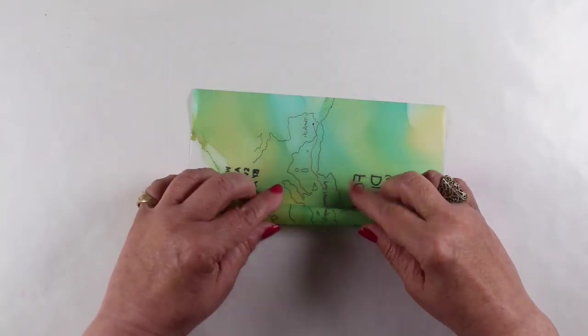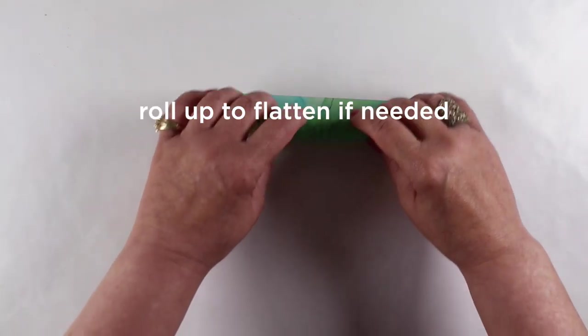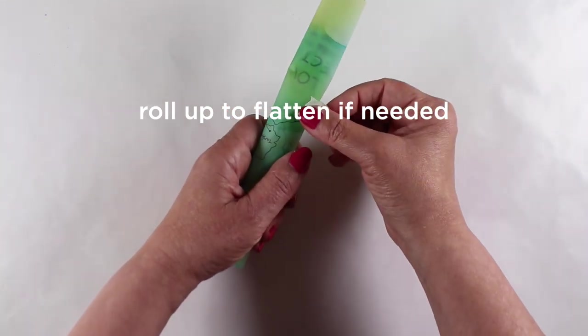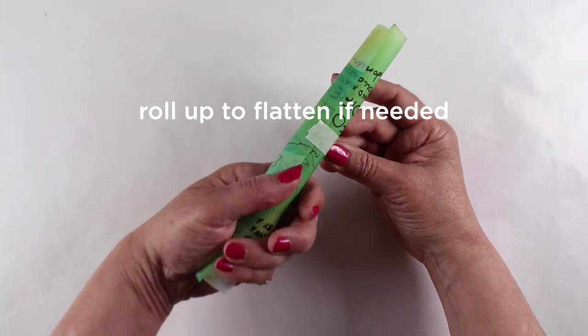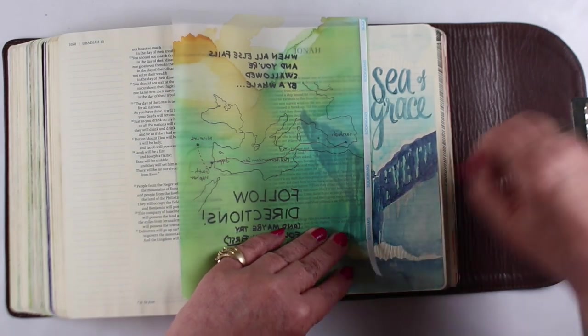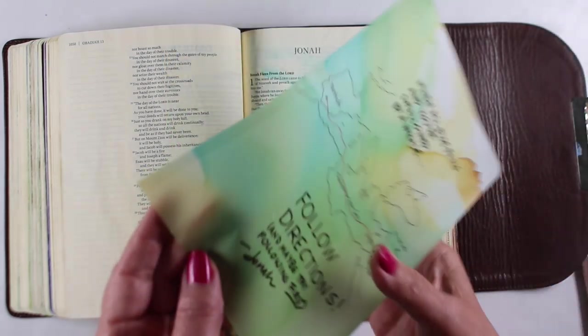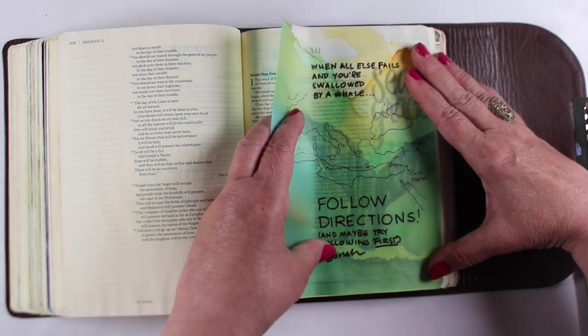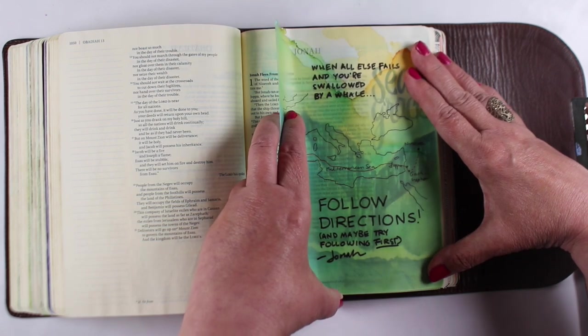And he didn't want to go there because he knew that God was going to extend mercy and grace. And he didn't want them to get mercy and grace. He wanted them to fry. And he didn't want to be part of that. So he went all the way across the Mediterranean. And that was a little bit excessive in the running away from God. But it is a lesson to us not to do the same.